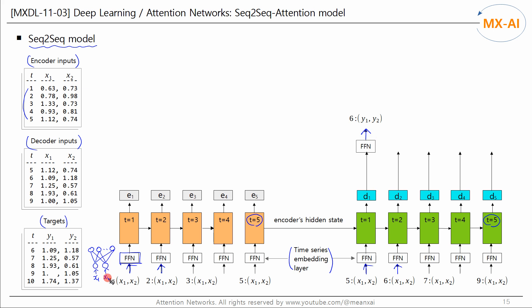When two features x1 and x2 are input, they are converted into a vector with a fixed size. If the number of output neurons is 30, the two features are converted into a vector with 30 elements. This is a vector representation for time series — for time series it is not strictly required, but is optional. This is similar to the role of the word embedding layer in natural language processing.